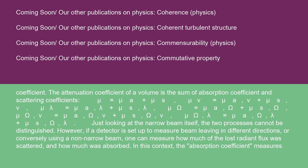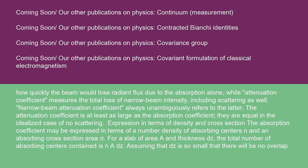Just looking at the narrow beam itself, the two processes cannot be distinguished. However, if a detector is set up to measure beam leaving in different directions, or conversely using a non-narrow beam, one can measure how much of the lost radiant flux was scattered and how much was absorbed. In this context, the absorption coefficient measures how quickly the beam would lose radiant flux due to absorption alone, while the attenuation coefficient measures the total loss of narrow beam intensity, including scattering as well. Narrow beam attenuation coefficient always unambiguously refers to the latter. The attenuation coefficient is at least as large as the absorption coefficient; they are equal in the idealized case of no scattering.